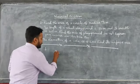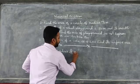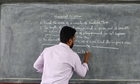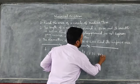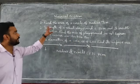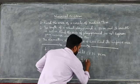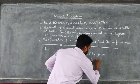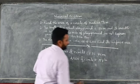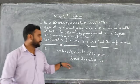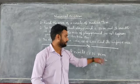The radius of the circle, small r, is given as 7 cm, and we have to find the area. The formula for area of a circle is π r square.